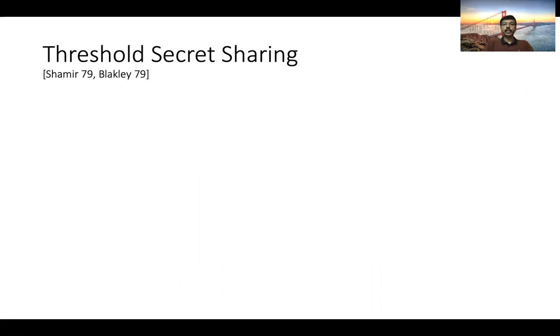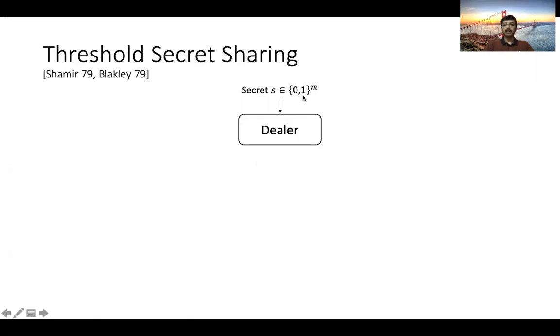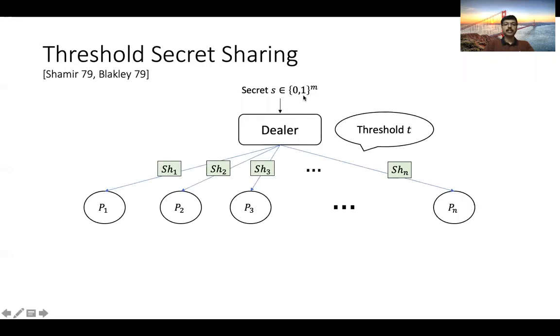Let me start this talk by recalling the notion of threshold secret sharing that was introduced in the seminal works of Shamir and Blakley in the late 1970s. In this setting, there is a dealer who has a secret message S that is M bits long. The dealer splits this secret into N shares SH1 up to SHN with some threshold parameter T, and sends the i-th share SHi to party Pi.